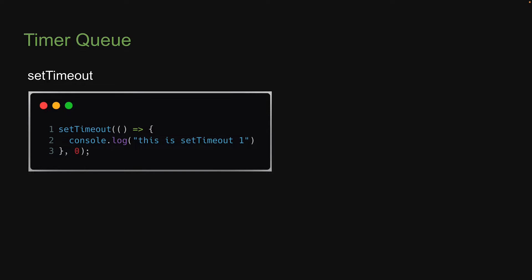Before we run our experiment, I want to mention that to queue a callback function into the timer queue, we can use either the setTimeout function or the setInterval function. I will be using setTimeout for the rest of this series. Here is the syntax for your reference. The first argument is the callback function and the second argument is the delay. Let's head back to VS Code and run our experiment.